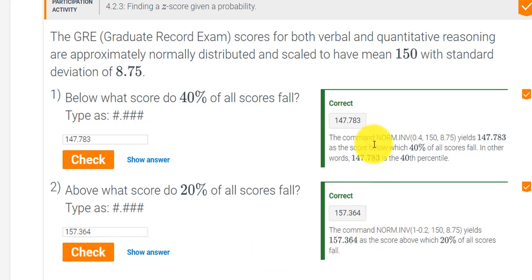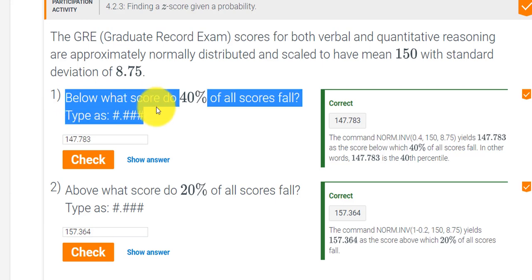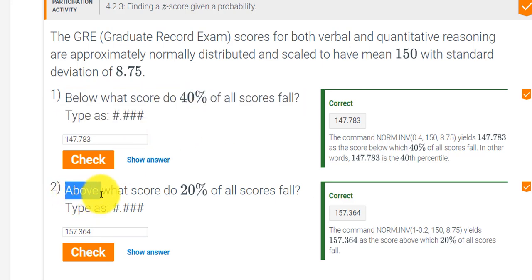When we were looking for the area on the left, we just used this NORM.INV function, and the probability was 40% or 0.4. That was because we wanted to know what was happening below, to the left of our curve. But now we want to know above, that's the right side of our curve. So we had to subtract 1 minus 0.2 to get 80%.